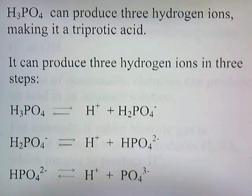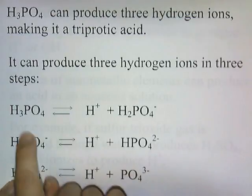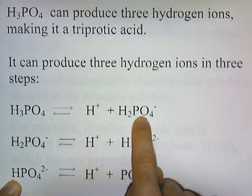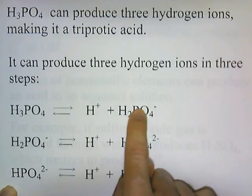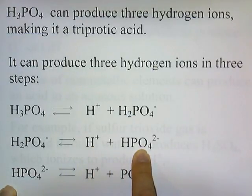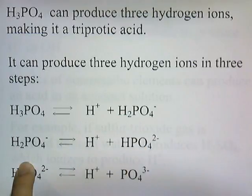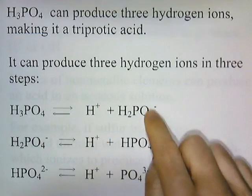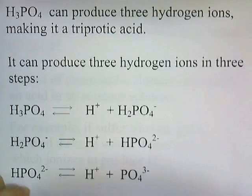H3PO4 can produce three hydrogen ions, making it a triprotic acid. It produces three hydrogen ions in three steps. First, H3PO4 is put in water and one hydrogen ion falls off, leaving behind H2PO4-. Then this dissociates and drops off another H+, leaving behind HPO4 2-. Then this dissociates into H+ and PO4 3-. So you end up with three hydrogen ions being produced in three steps — it's a polyprotic acid.